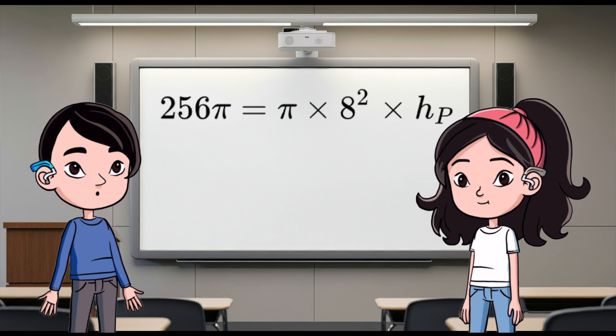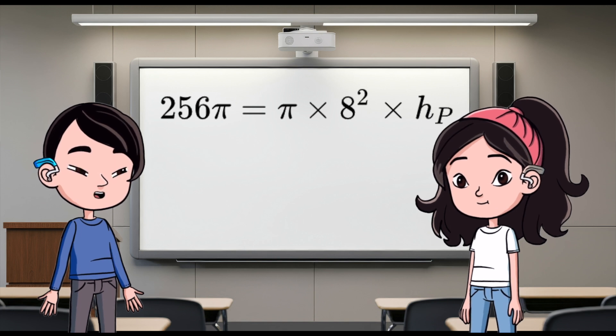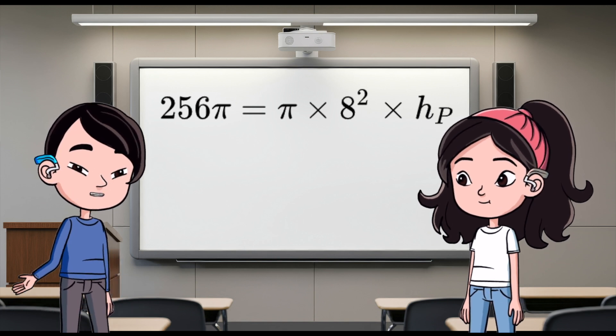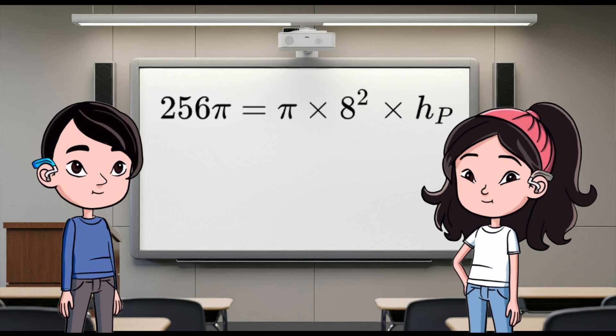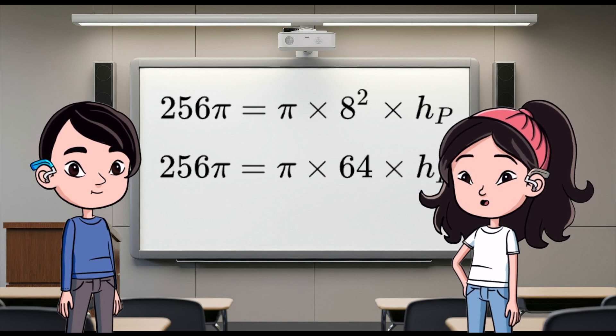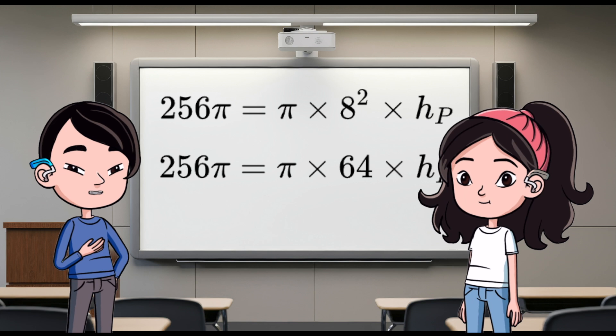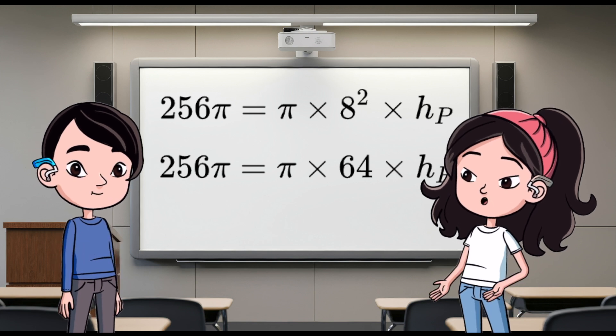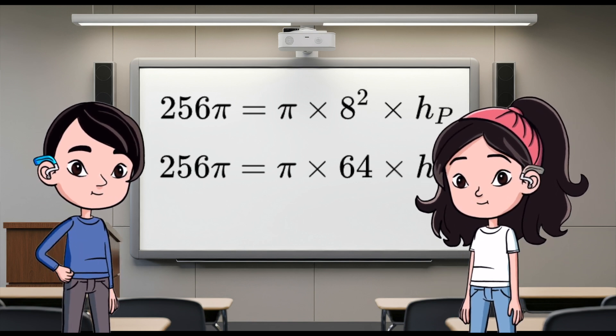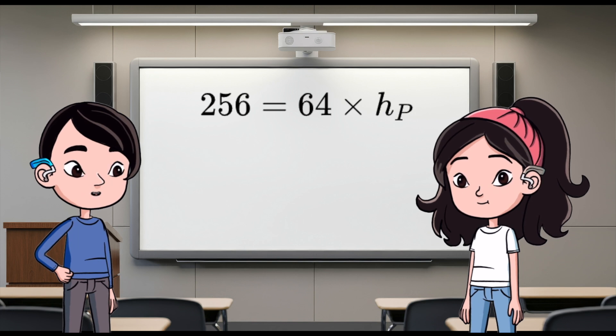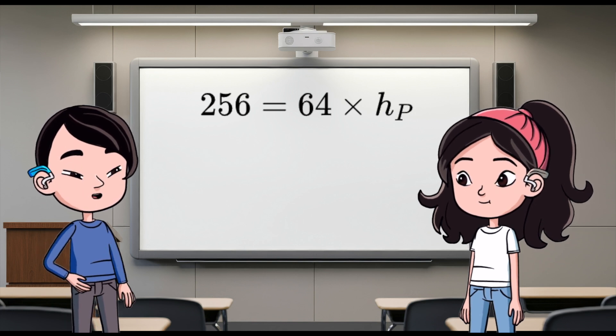Plugging in those values. So, 256π equals π times 8² times h sub P. Simplify that. 8² is 64. So, we have 256π equals π times 64 times h sub P. Let's divide both sides by π to keep it clean. Good call. That gives us 256 equals 64 times h sub P.